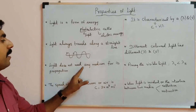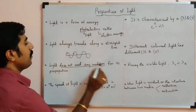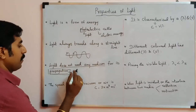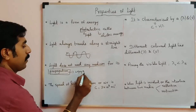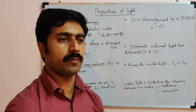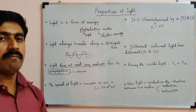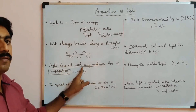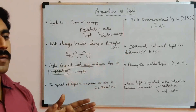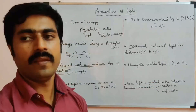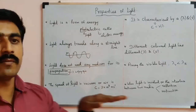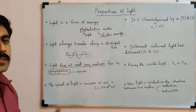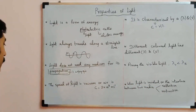The third property: light does not need any medium for its propagation. Propagation means to spread or travel. Light can travel without a medium.